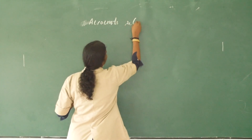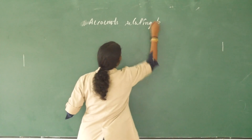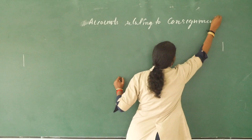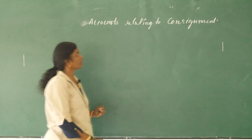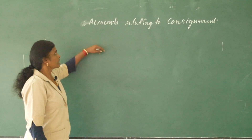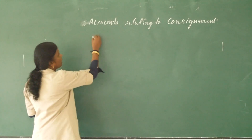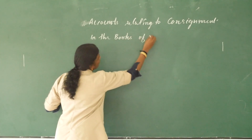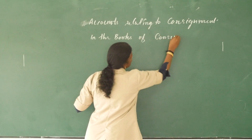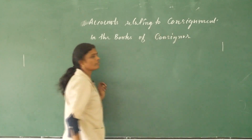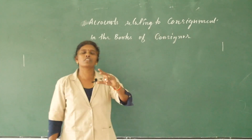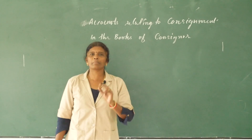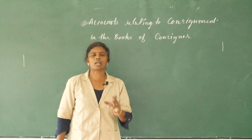Accounts relating to consignment. First part: in the books of consigner. In the books of consigner, we prepare two important ledgers. First one, consignment account. Next one, consignee's account.